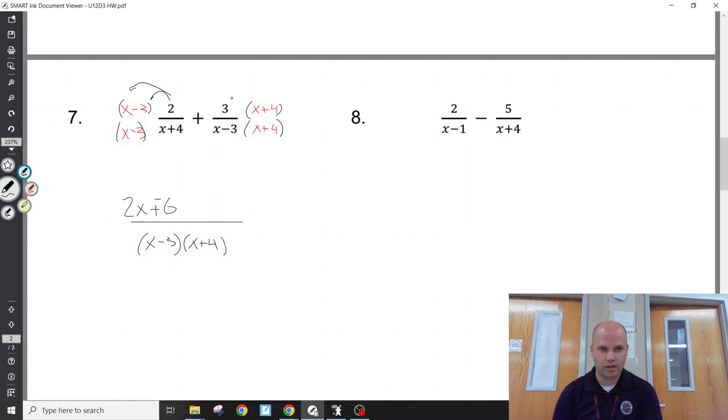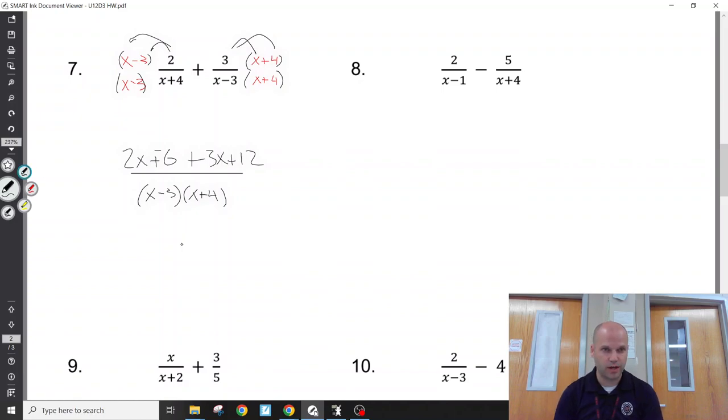But we do want to distribute the numbers in the top. 2x plus negative 6, 3x plus 12. And then we can combine, look to factor and simplify if it's possible. 5x plus 6, x plus 3, x plus, x minus 3, x plus 4. If I could factor something out of the top, I would. Try to cancel. I don't.